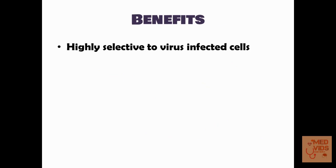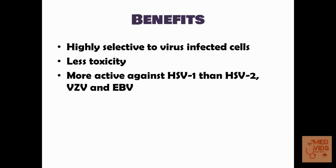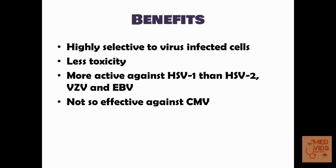Acyclovir is highly selective to virus-infected cells. Since not all cells in the body are infected with herpes viruses, this selectivity means lesser toxicity for the patient — only virus-infected cells are affected. Additionally, acyclovir is more active against herpes simplex virus 1 than herpes simplex virus 2, varicella zoster virus, and Epstein-Barr virus. It is not so effective against cytomegaloviruses.